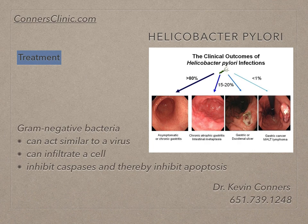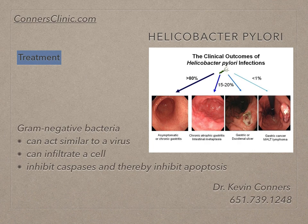If you have healthy HCL production by your stomach and healthy digestive enzymes in your duodenum — your first part of your intestines — you won't ever get sick from it. You will be exposed to it, but your immune system will kill it off right away. H. pylori goes into your stomach first, and if you have adequate hydrochloric acid production by your stomach cells, it will be killed and you will have no issue with it.